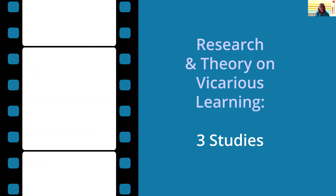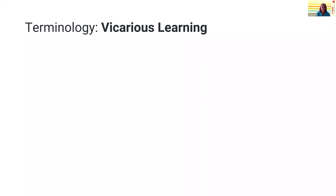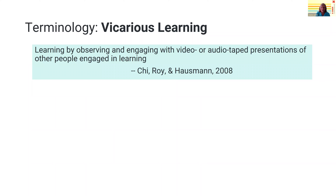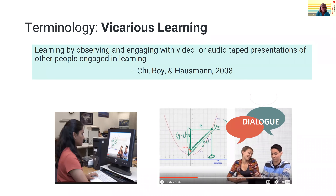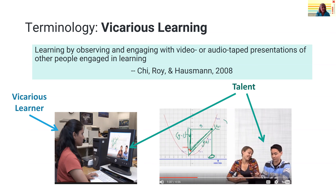I'd like to turn to research and theory about vicarious learning and share with you the results of three of our studies. First, I'd like to define vicarious learning. This was a term that Bandura introduced in the 1960s, but we're following a more technology-enhanced version by following Mickey Chi and colleagues' definition: learning by observing and engaging with video or audio tape presentations of other people engaged in learning. Viewers of Sasha and Keone's dialogue are participating in their dialogue indirectly, or vicariously. The students in the videos are called the talent, and the viewer engaged with their dialogue is called the vicarious learner.